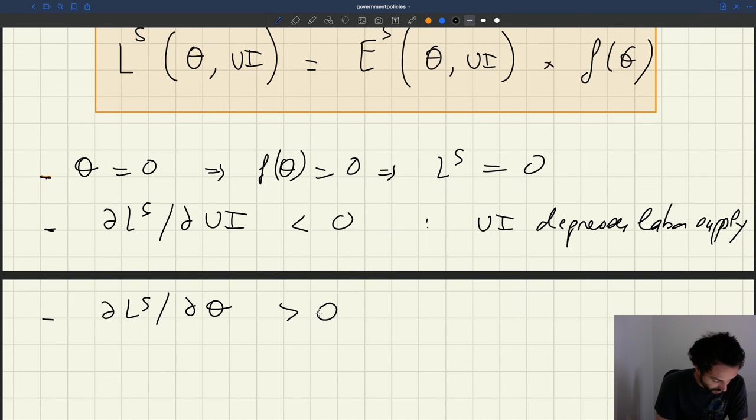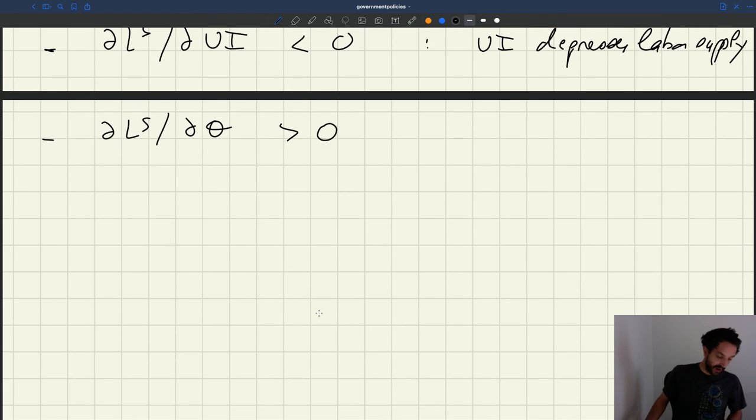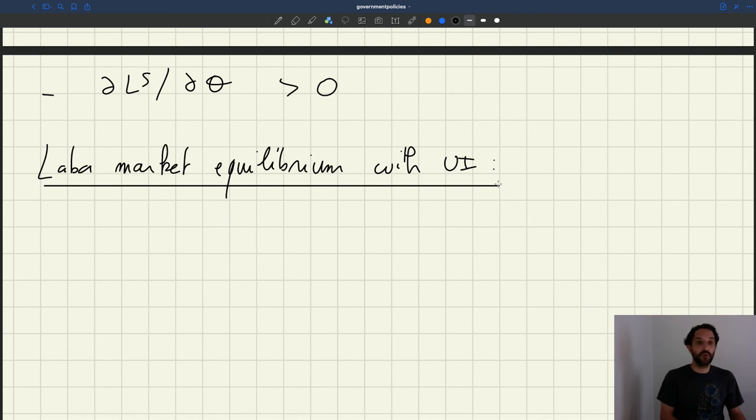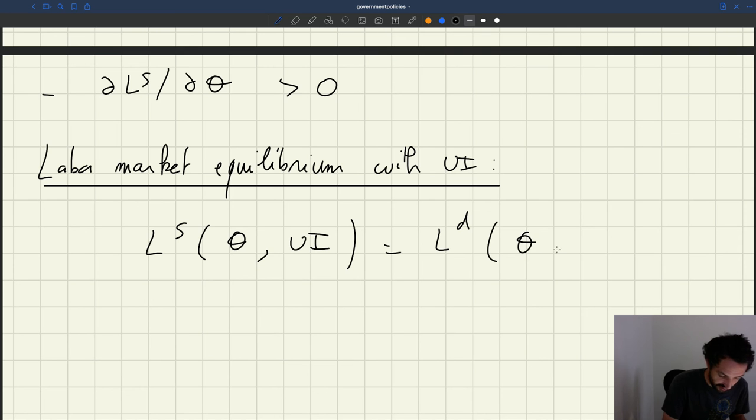So now, we're in a position to look at the equilibrium in the model with UI. So the labor market equilibrium is going to be exactly as usual. In equilibrium, it has to be that the labor supply is equal to the labor demand. So the labor supply depends on theta, but now it also depends on UI, because UI affects search effort, has to be equal to the labor demand, which depends on theta, and also depends on UI. Why does it depend on UI? Because UI may affect the wages that are paid by firms through bargaining.